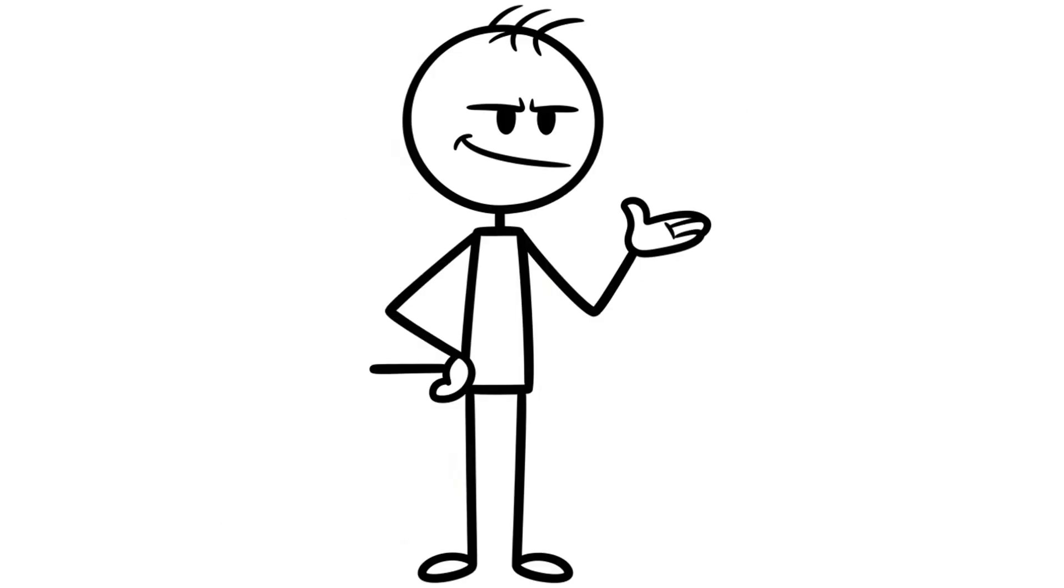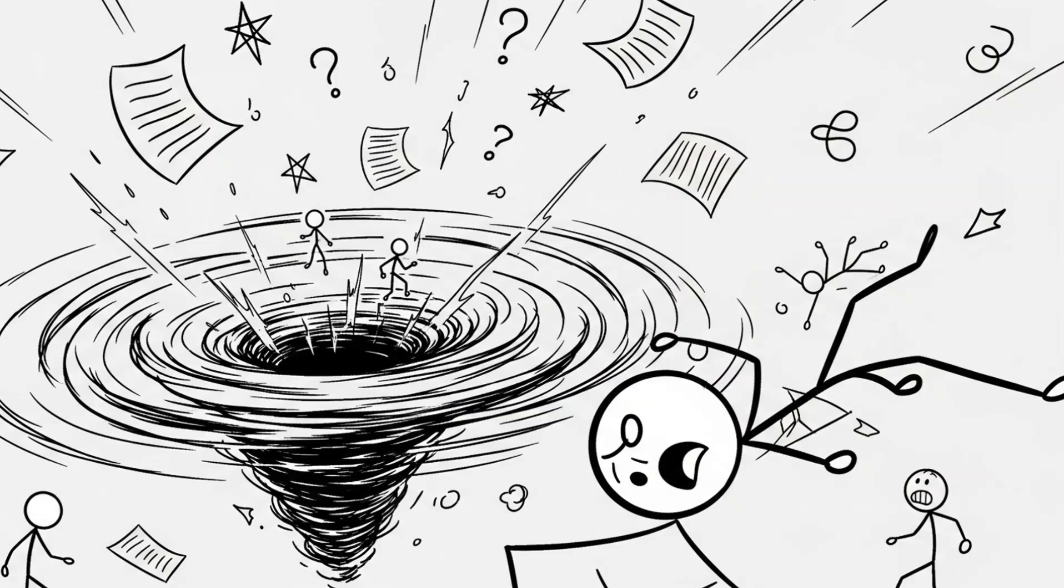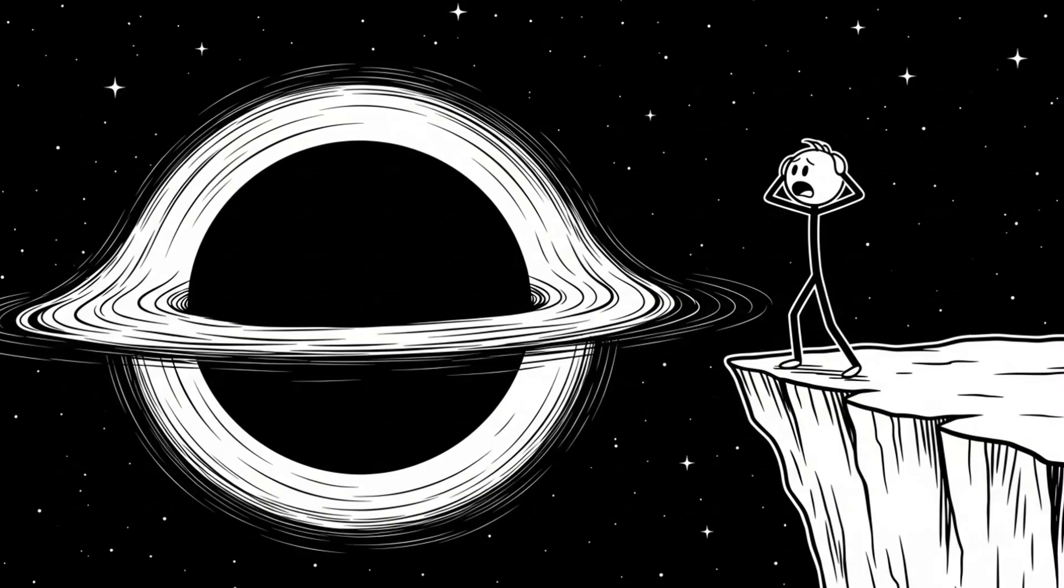What happens to information that falls inside? According to quantum physics, information about particles, like their state, spin, and energy, can never be destroyed. But black holes seem to break this rule. When matter falls in, it disappears forever, leaving no trace. This creates the black hole information paradox, also called the black hole data heist.